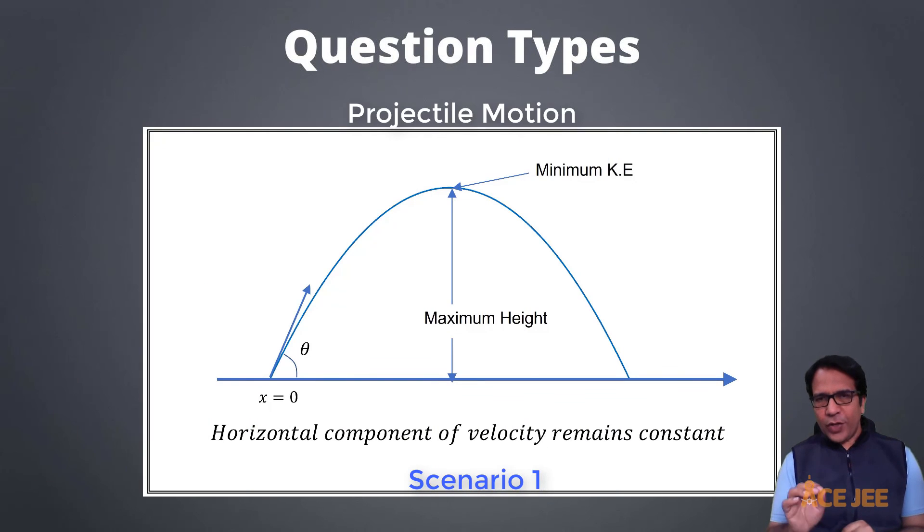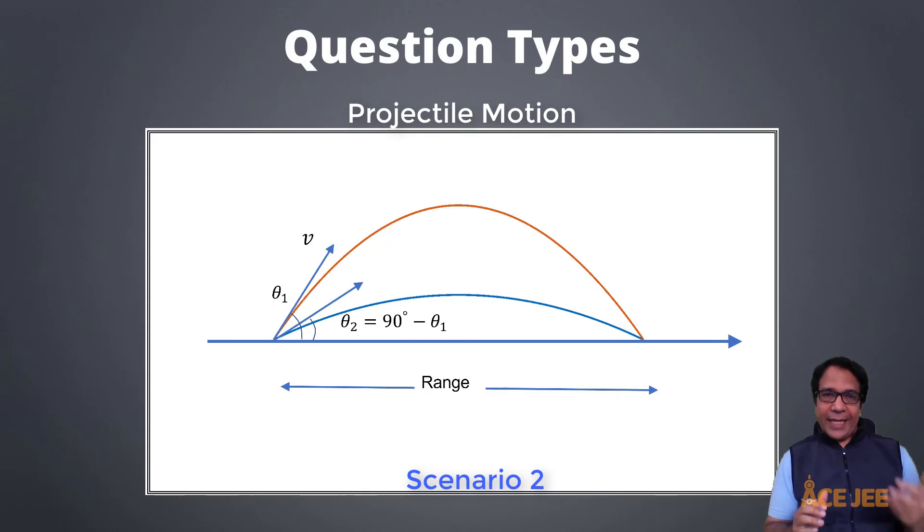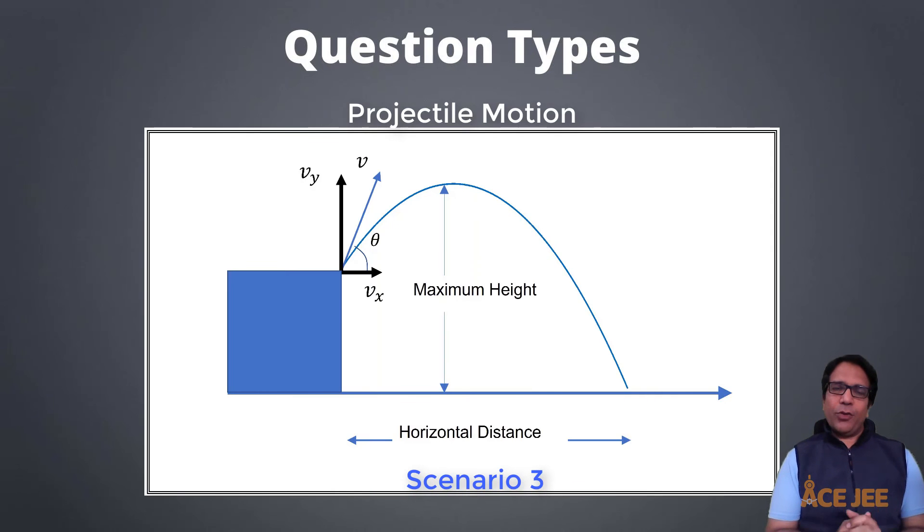So in the first scenario, given launch velocity and projection angle for a projectile thrown from the ground, you might be asked to determine the maximum height or range or minimum kinetic energy of the projectile. In the second scenario, you might be tested on the fact that a projectile thrown with the same launch velocity, but angles theta and 90 minus theta, for example 30 degrees and 60 degrees, will have the same range. In the third scenario, you might be given that the projectile is thrown from a height and now you might be asked to determine the range or time taken to hit the ground.